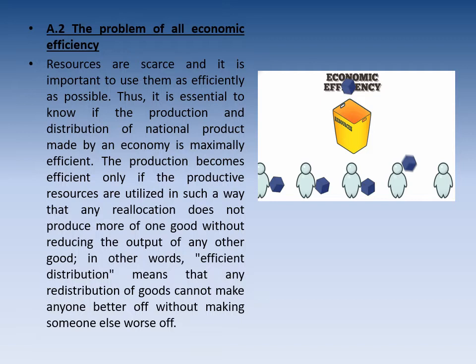The production becomes efficient only if the productive resources are utilized in such a way that any reallocation doesn't produce more of one good without reducing the output of another good. In other words, efficient distribution means that any redistribution of goods cannot make anyone better off without making someone else worse off. يعني لو عملت reallocation هيكون ده على حساب شيء آخر. Maximum satisfaction معناها إني وصلت للـ efficiency — وده نتيجة مبدأ scarcity.